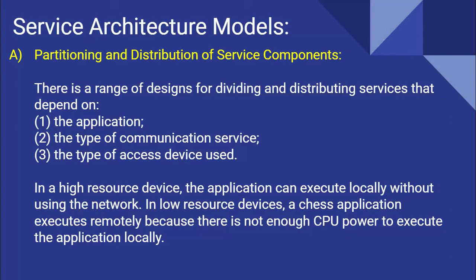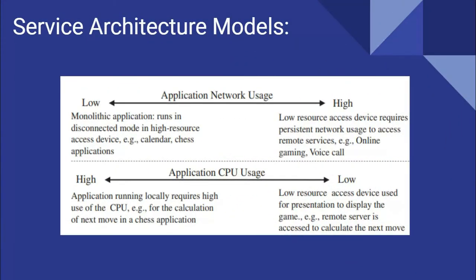This illustrates application network usage from low resources to high. For low-resource devices, a single operation runs in disconnected mode - for example, calendar or chess applications run on your local computer. For high-resource access devices, persistent network usage is required to access remote services, such as online gaming and voice calls. When you make a voice call, your phone connects to a telecom server, which uses its resources to route your call from a tower to the destination.